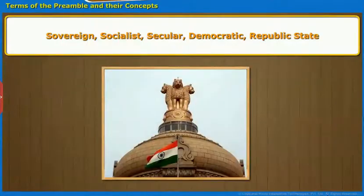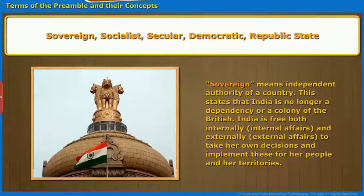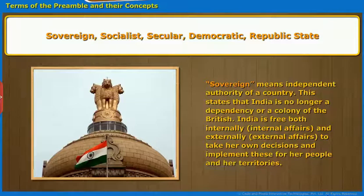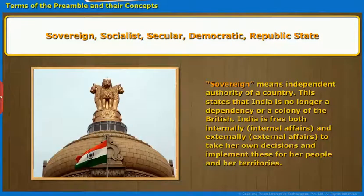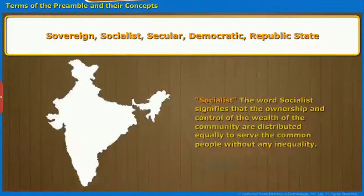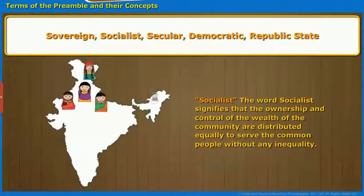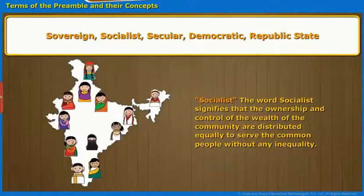Sovereign, Socialist, Secular, Democratic, Republic State. Sovereign means independent authority of a country. This states that India is no longer a dependency or a colony of the British. India is free both internally and externally to take her own decisions and implement these for her people and her territories. The word Socialist signifies that the ownership and control of the wealth of the community are distributed equally to serve the common people without any inequality.